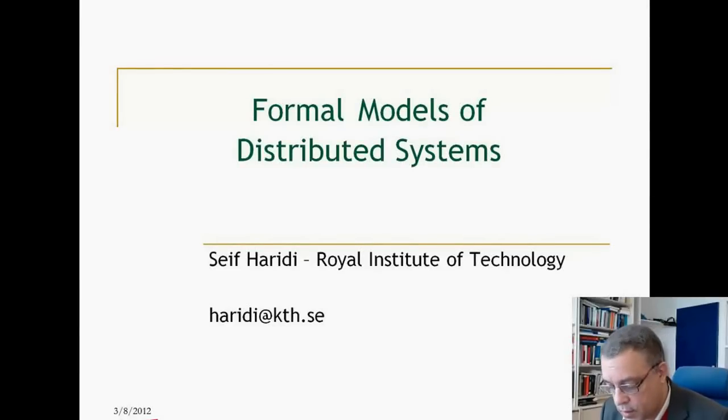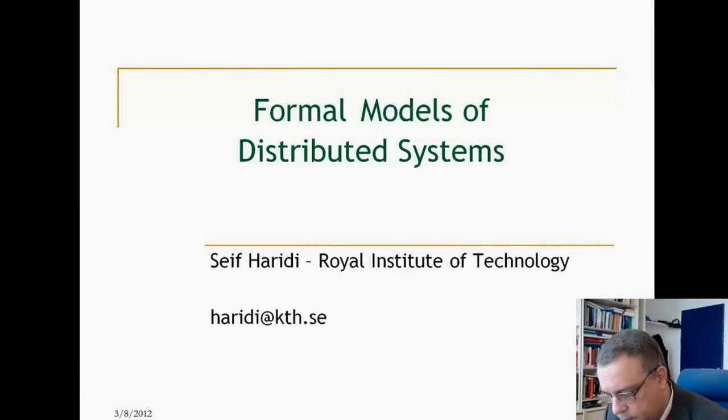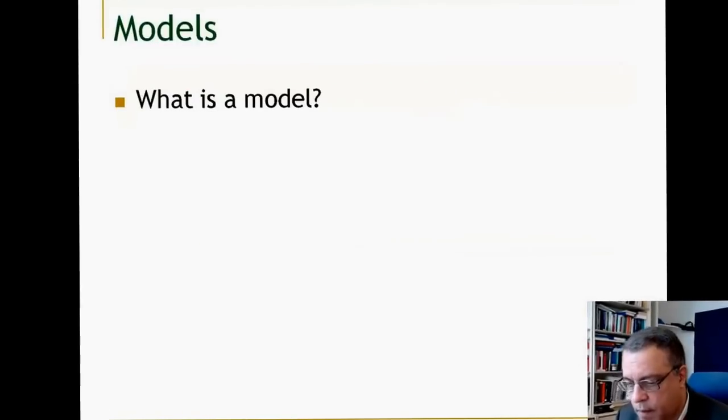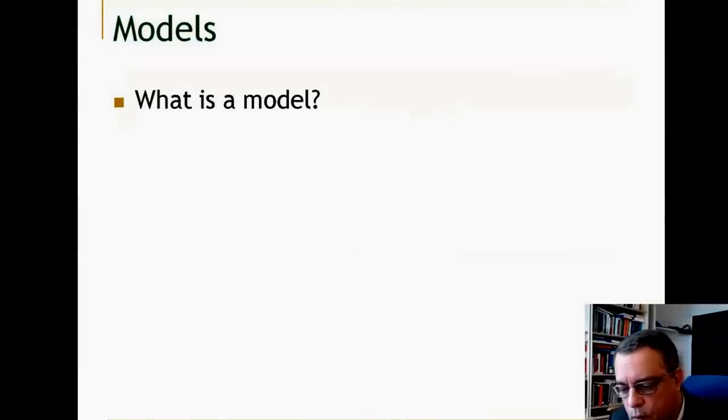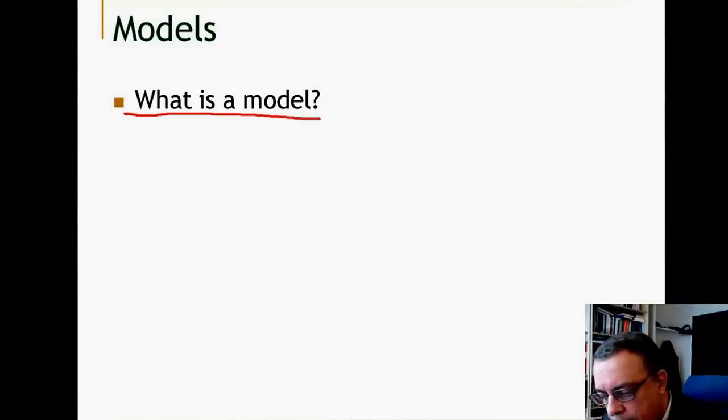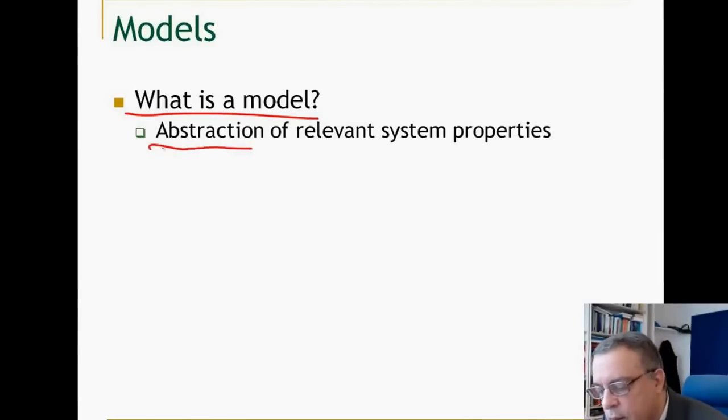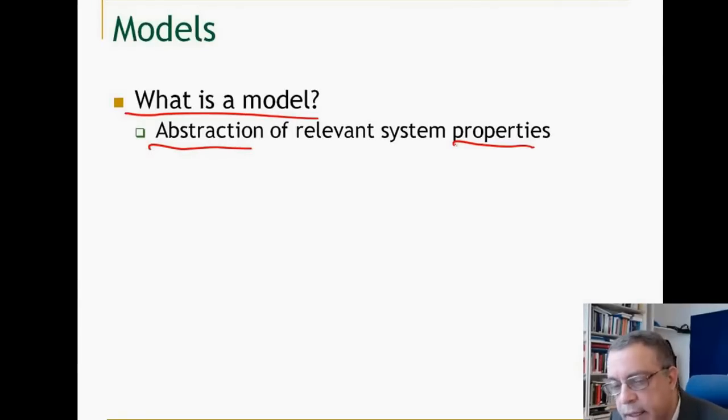We are going to talk about formal models of distributed systems. What is a model? A model is an abstraction of relevant system properties, which means you look to reality, you keep some of the properties of reality and you remove others.